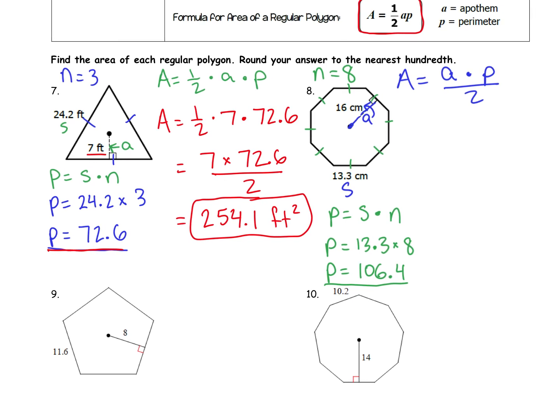And with that, I can now find the area of my shape. Area equals apothem 16 times perimeter, 106.4, divided by 2. Let me do that in my calculator. 16 times 106.4, divided by 2. It's going to give me a large area. A lot of our areas are going to end up being pretty big. 851.2 centimeters squared.